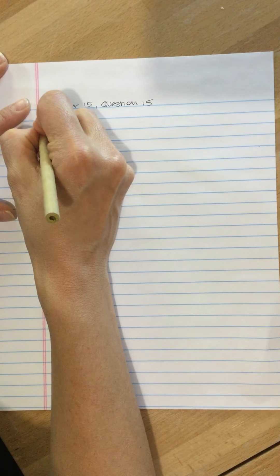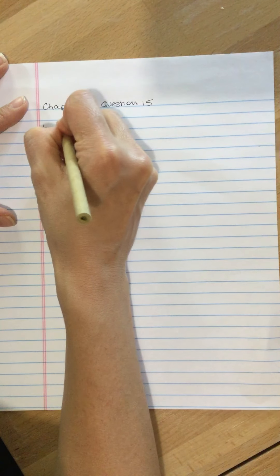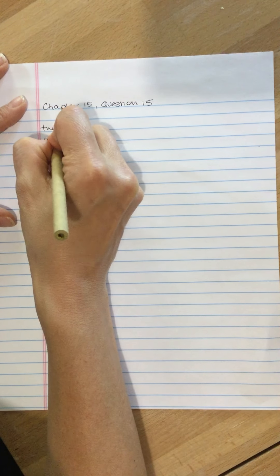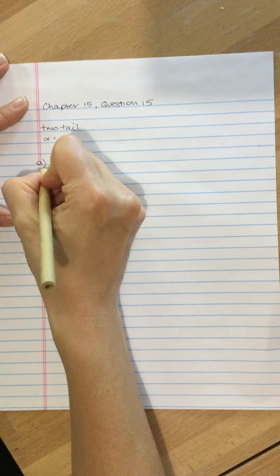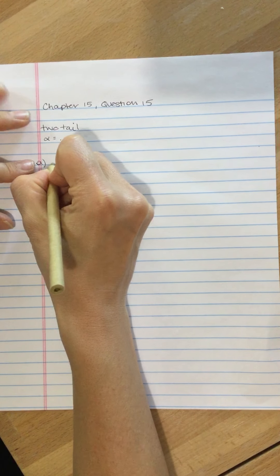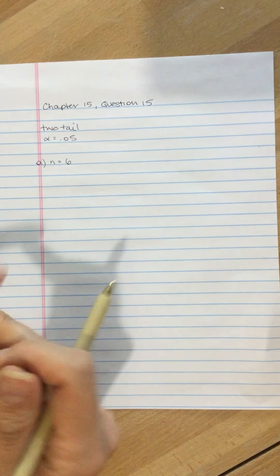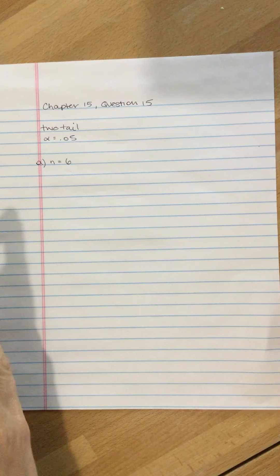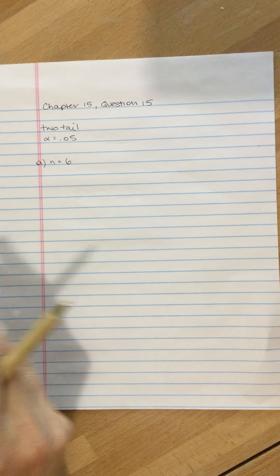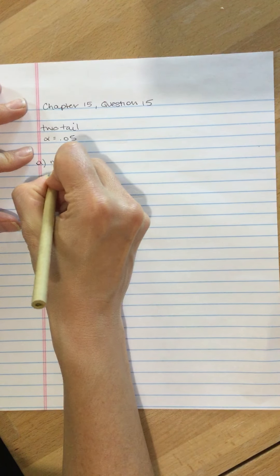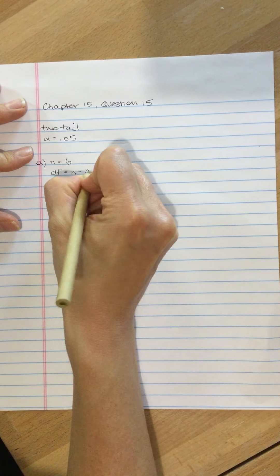So we've got a two-tailed test, alpha of 0.05, and what we need to do is, question A gives us sample sizes. This question is really about practice calculating your degrees of freedom and practice using the table in the back of the book, which I think everybody needs some practice making sure that they're reading from the right column. The degrees of freedom is equal to n minus 2.